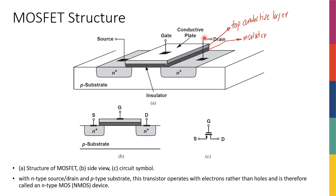We cannot connect metal to P-substrate directly, so we need a region called N-plus diffusion. We diffuse N-plus, or N-type semiconductor atoms, into the P-substrate to create this N-plus diffusion and then connect the drain to it. We do the same thing on the other side, so this device is perfectly symmetric along the x-axis. The two sides of the gate are pretty much identical, and we call one side drain and the other source.